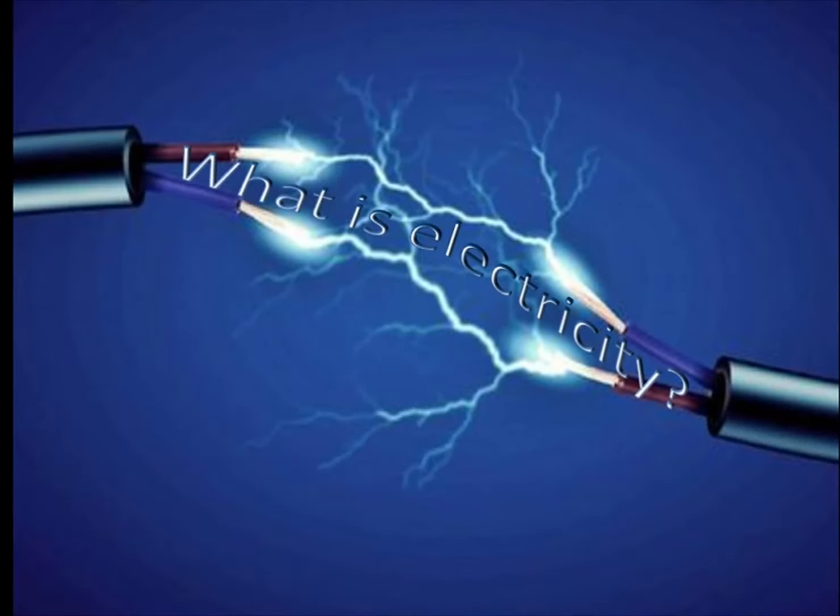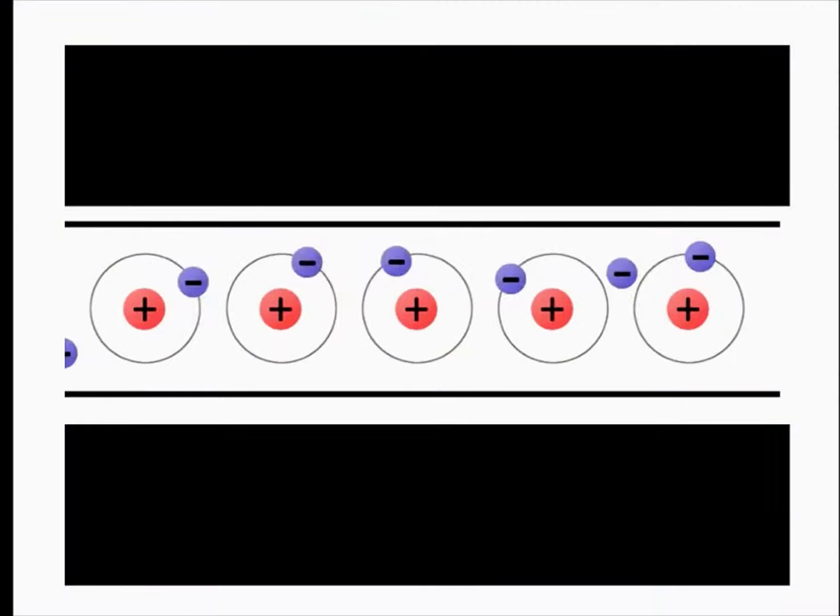We will start with what is electricity. Electricity is just directional flow of electrons. That is, electrons move from one atom to other in a particular direction as shown here.